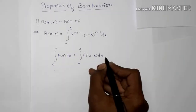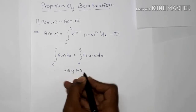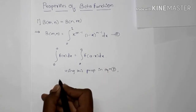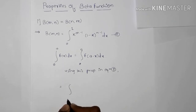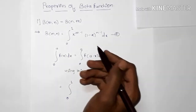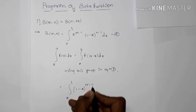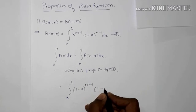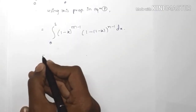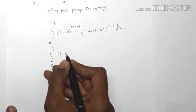Using this property in equation 1, we get the integral from 0 to 1. Here x changes to a minus x, and since a is 1, we get 1 minus x raised to m minus 1 into 1 minus (1 minus x) raised to n minus 1 dx. So we get the integral from 0 to 1 of 1 minus x raised to m minus 1 into x raised to n minus 1 dx.